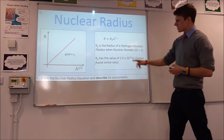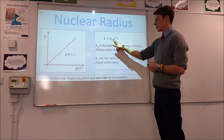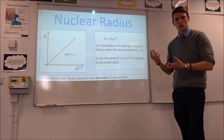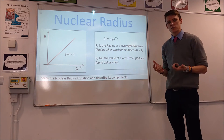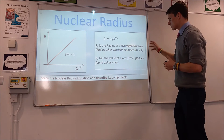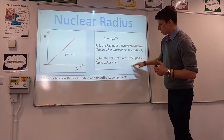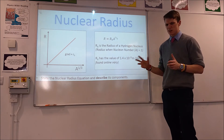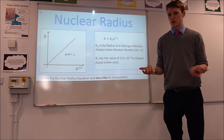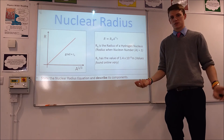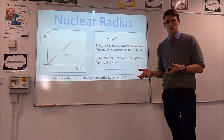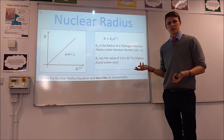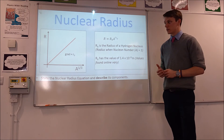If you plug in A equals 1 into this equation, you can see that R equals R₀, which means R₀ must be the radius of a hydrogen nucleus. Typically you will see values of about 1.4 × 10⁻¹⁵ metres — so in the femtometre range — but you see different values. If you Google it or look in a textbook, you'll see loads of different values; there isn't one universally agreed value across textbooks, but it won't matter particularly for working with this equation.